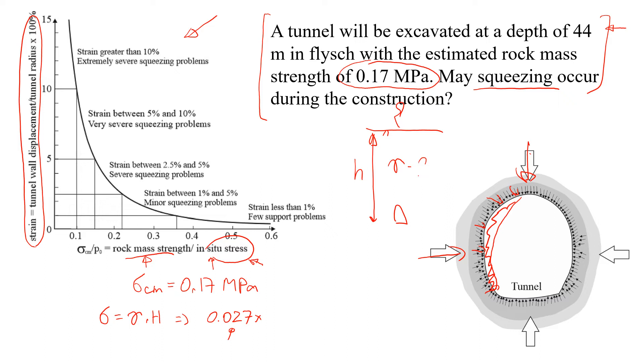This is a very commonly used formula. You can find it in any textbooks on rock mechanics. That will give you 1.19 MPa. That will be the stress σ₁ acting on this tunnel, 1.19 MPa.